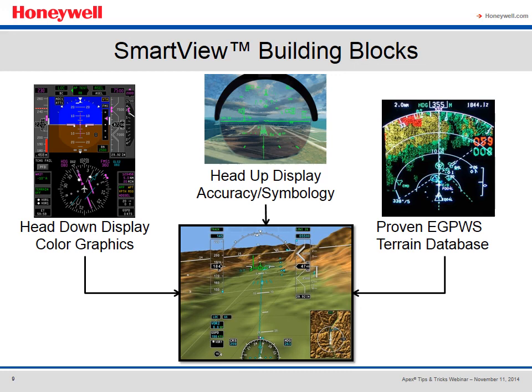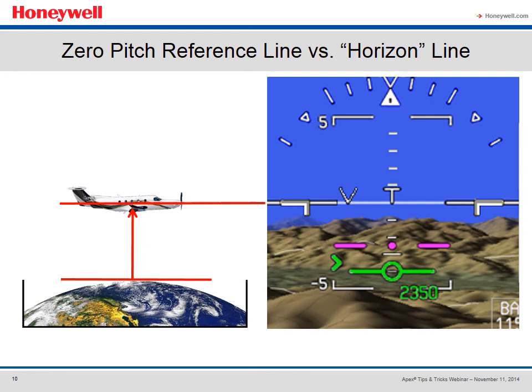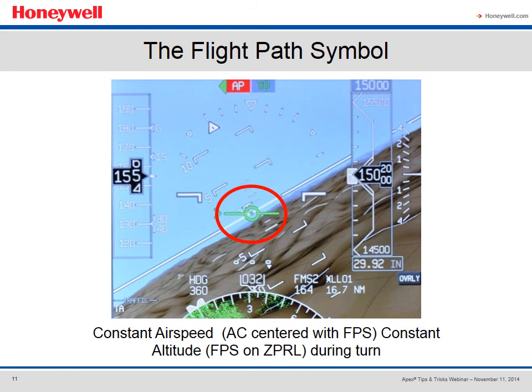SmartView starts with standard primary flight display functions. Honeywell's proven EGPWS terrain database provides an accurate 3D background terrain image, and SmartView adds HUD symbology to the PFD, providing an accurate means of controlling the aircraft's flight path along with unique energy management features. The zero pitch or zero path reference line can be thought of as a line tangential to the Earth's surface at your current location, transposed at your altitude — it represents the true horizon. Anything above the line is above you; anything below is below you. The flight path symbol represents the aircraft's flight path angle and track. If the flight path symbol is below an obstacle on the display, the current flight path will not clear that obstacle.